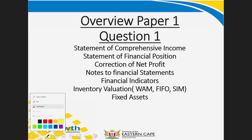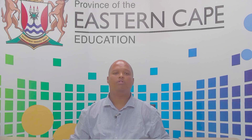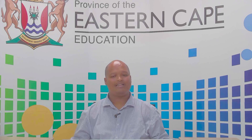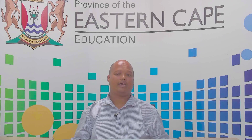For example, if they ask the statement of comprehensive income — previously known as the income statement — it might be a full income statement with a full statement of financial position, or it can be a full statement of comprehensive income with only a section of the statement of financial position, such as the asset section, or the equity and liability section. Also, they might ask the correction of net profit with the statement of financial position. When it comes to indicators, in some exams they will give it as an adjustment, where you use the final answer of that indicator to get figures in the income statement or the statement of financial position.